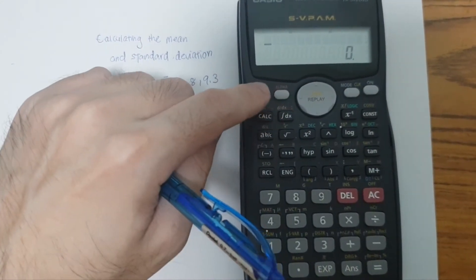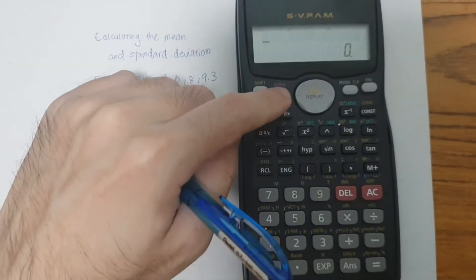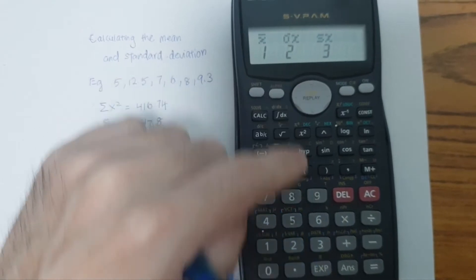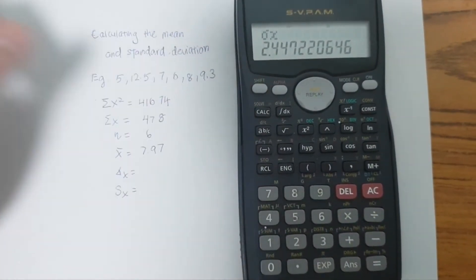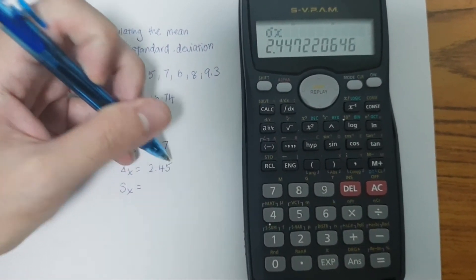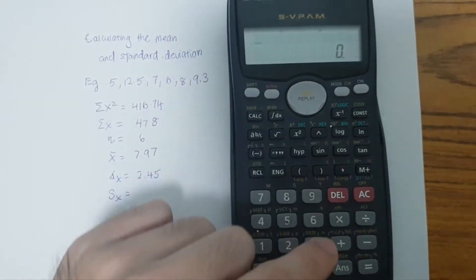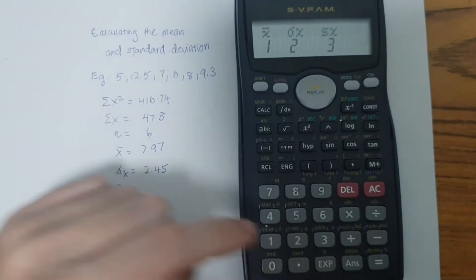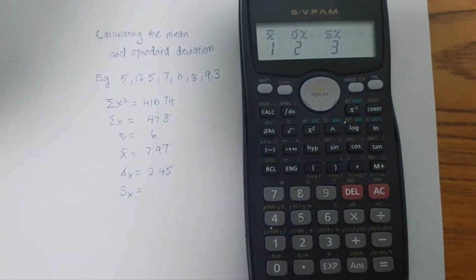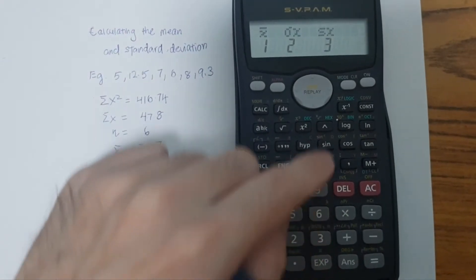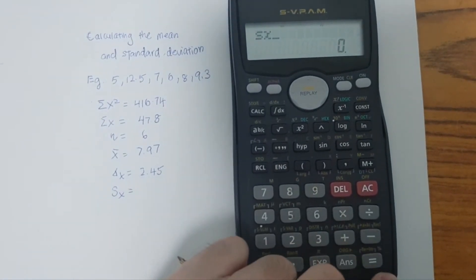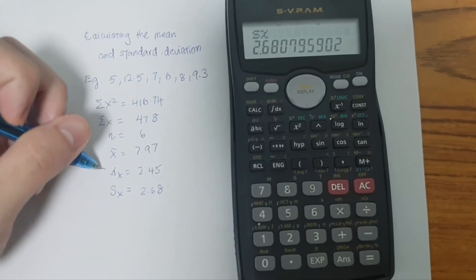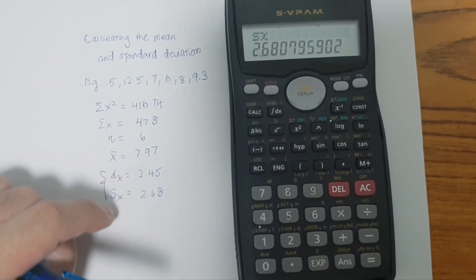To calculate either the population or the sample standard deviation, we click Shift, two. For the population standard deviation, we press number two, and here will be the value of the population standard deviation. To calculate the sample standard deviation, we do the same by clicking Shift, two, and our sample standard deviation is choice number three — we click three, and this gives us the sample standard deviation. There is a difference between the population standard deviation and the sample standard deviation.